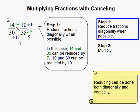Then we divide 10 on both the 10 and the 30 here. And that gets us 1 here and 3 here.